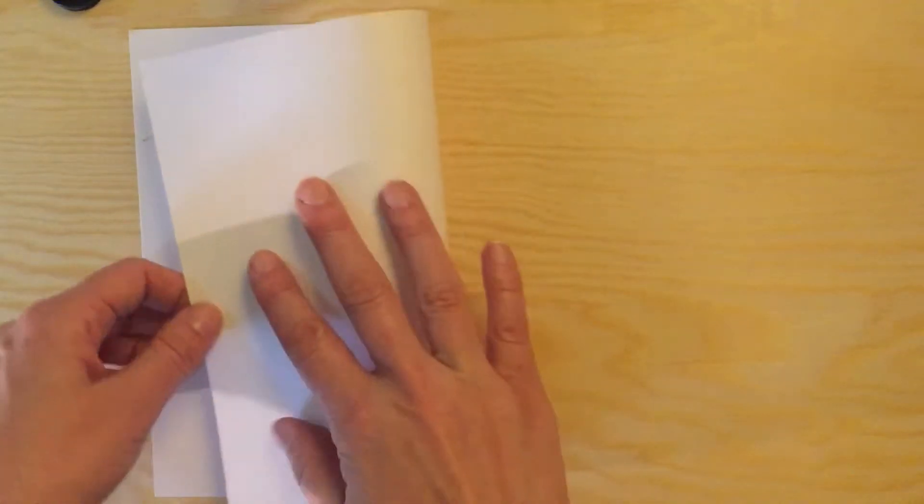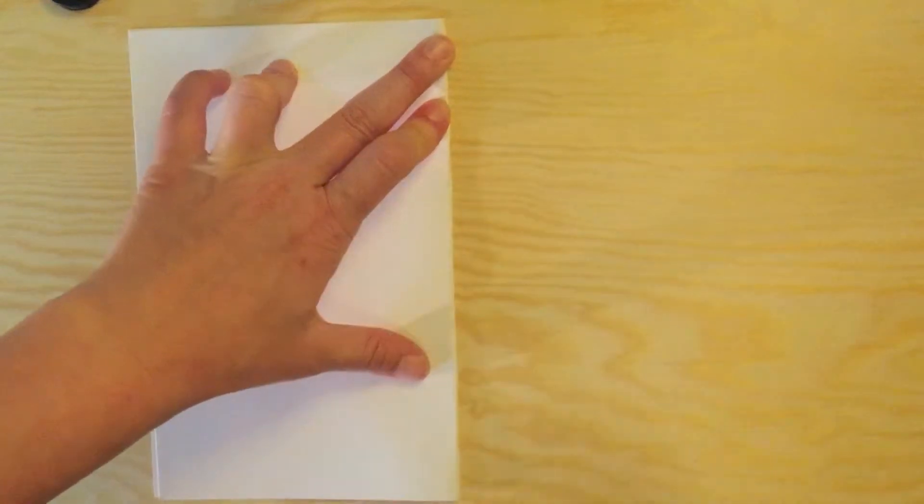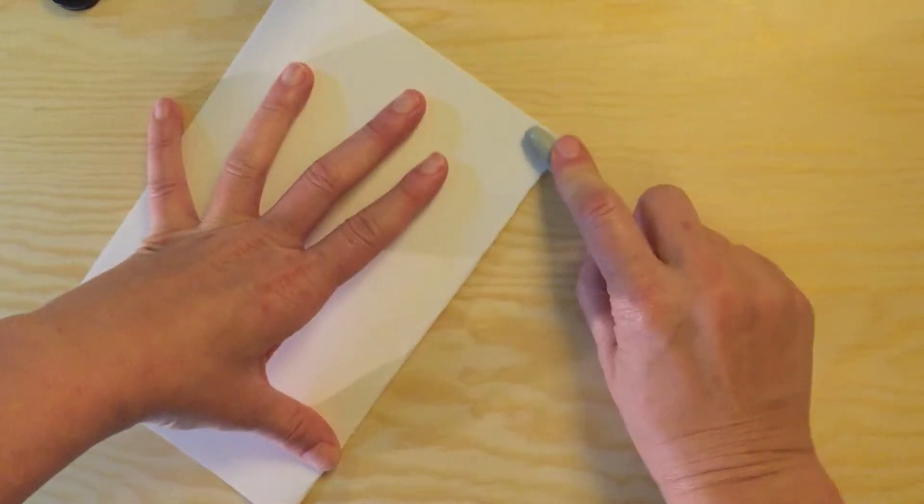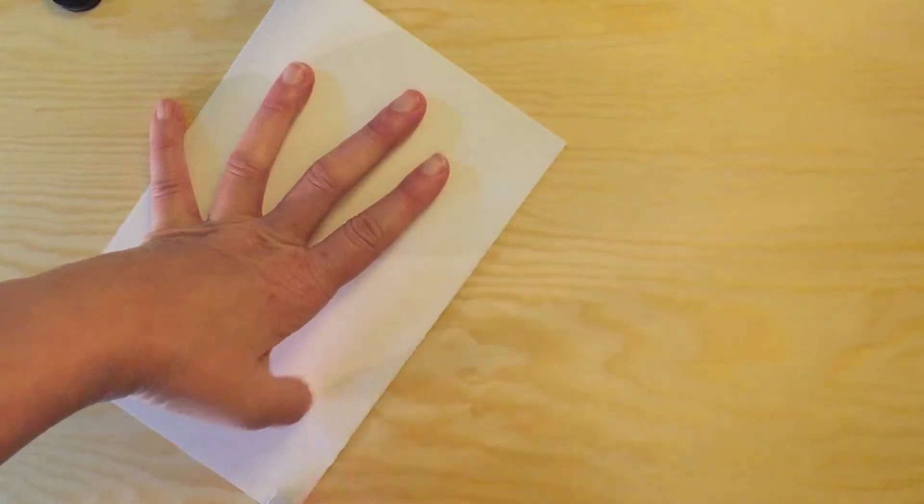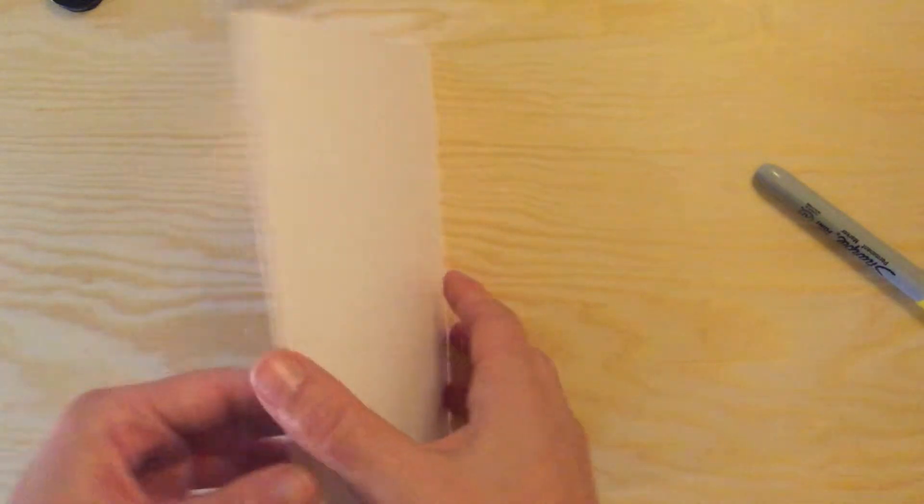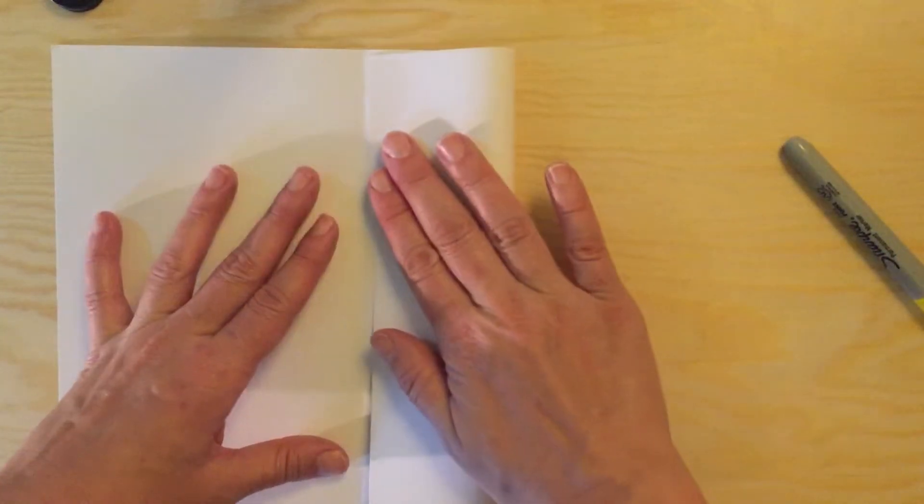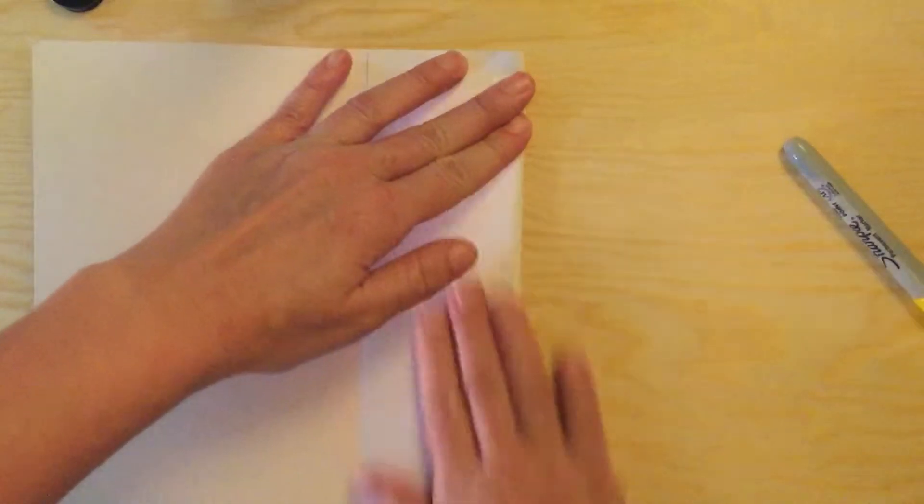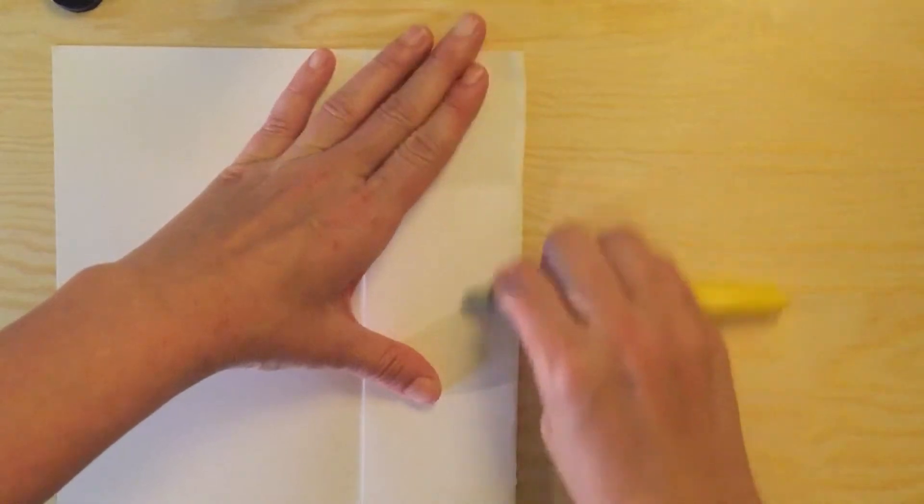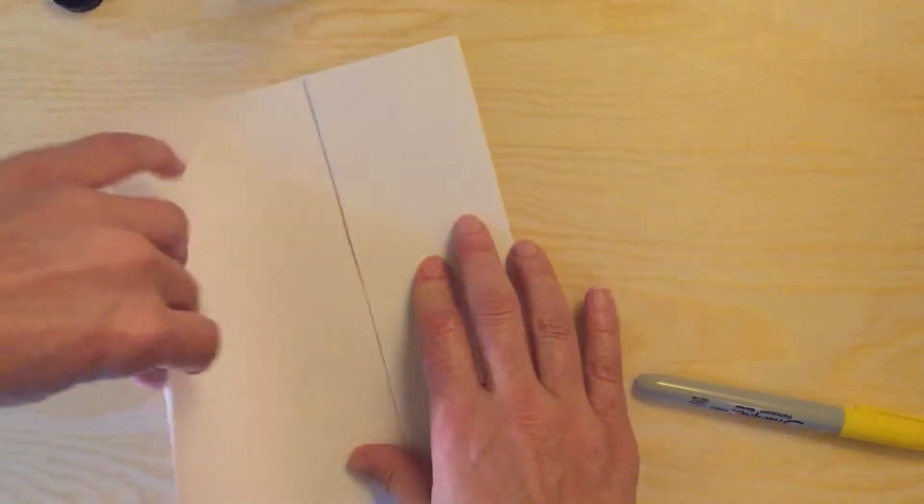First fold the paper in half. I'm using card stock but you can use any kind of paper for this, plain paper or scratch paper. Then you want to open it up and fold the outside edge into the middle. If you fold in this way then all the folds will line up when you go to make the book. Fold the other outside edge into the middle.